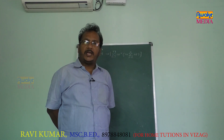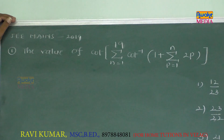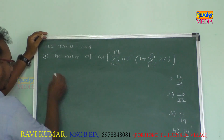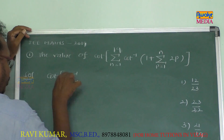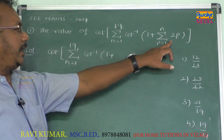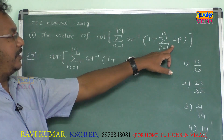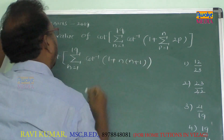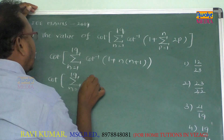We will go ahead into inverse trigonometric functions. The value of cot of sigma n equals 1 to 19, cot inverse of 1 plus sigma p equals 1 to n. The sum of even natural numbers is 2 plus 4 plus 6 plus ... plus 2n, and the formula for sum of even natural numbers is n(n+1).